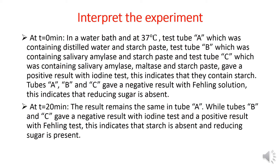At t equal 20 minutes, the results remain the same in tube A, while tubes B and C gave a negative result with iodine test and a positive result with Fehling's test. This indicates that starch is absent and reducing sugar is present in tubes B and C.